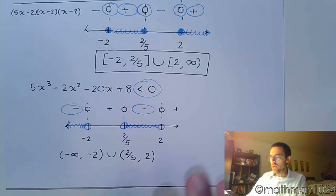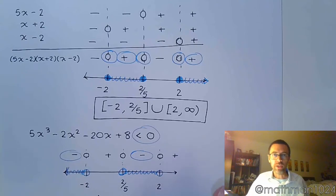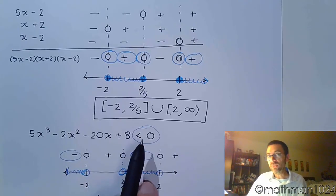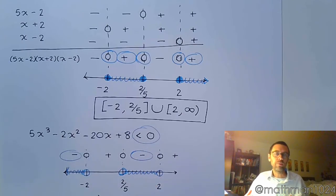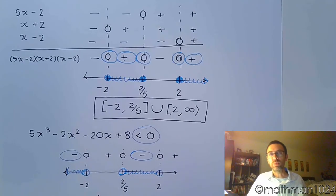But the key thing I want to point out here is that the signs you get from the sign chart would be the same no matter what. It's just at the end, what are you looking for? Are you looking for less than 0, greater than 0, what? And once you know the regions you're looking for, you circle those guys and you color in the appropriate regions on the number line so that you can get your interval notation.